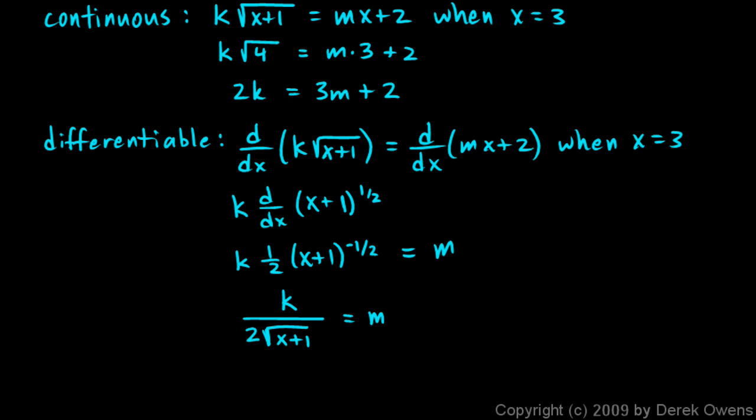So let's plug in x equals 3. And this becomes a square root of 4, which is just 2. And multiplied by that 2 gives us a 4 in the denominator. So we get k over 4 equals m. Or k is equal to 4m.